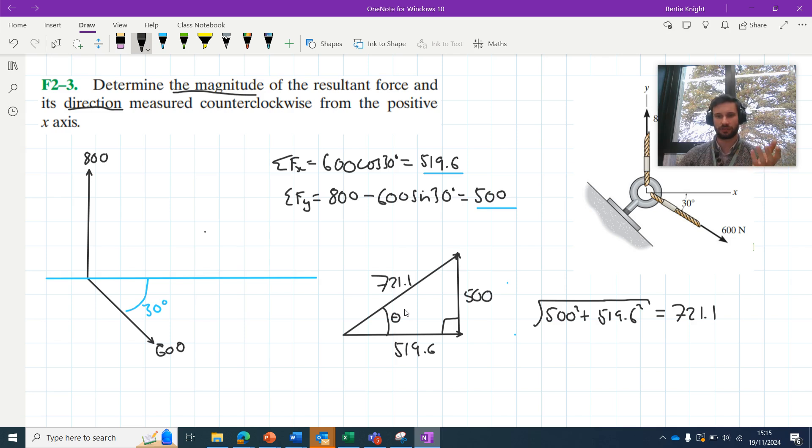So since we have every side for this triangle now, we can use any trigonometric ratio that we like—we could use sine, cosine, or tangent. Let's just use tangent. We can say that the tan of theta in this context is equal to the opposite over the adjacent. So the opposite in this case is 500, the adjacent is 519.6. Therefore, theta is equal to the inverse tan of 500 over 519.6. When we plug that into our calculator, that will give us 46.1 degrees.